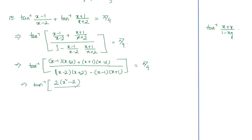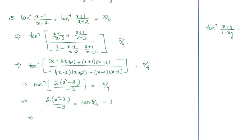So we have tan⁻¹[2(x²−2)/(−3)] = π/4. Since tan⁻¹ of something equals π/4, we can write: 2(x²−2)/(−3) = tan(π/4). We verify that the domain condition for tan⁻¹ is satisfied. Since tan(π/4) = 1, transferring to the right-hand side and solving: 2x² − 4 = −3.